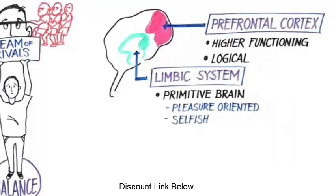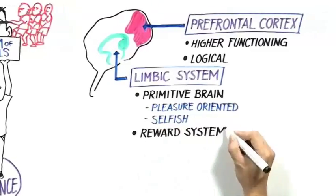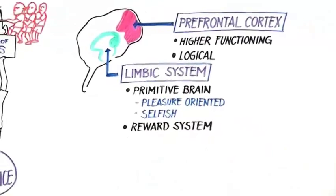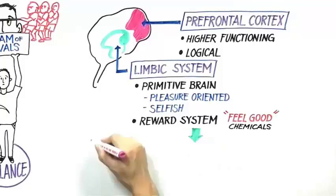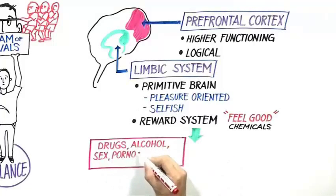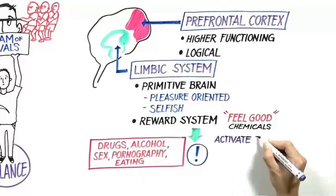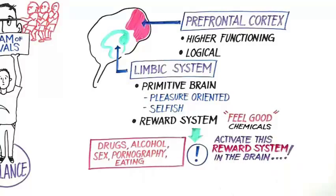This limbic system is also called the reward system because it is responsible for making us feel better by releasing feel-good chemicals in the brain. Drugs, alcohol, sex, pornography, and even eating activate this reward system in the brain.